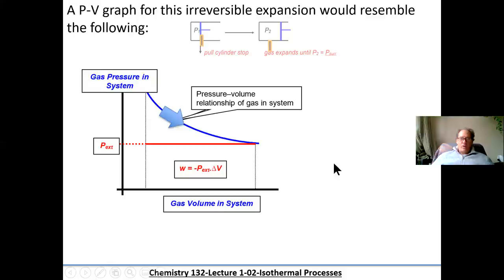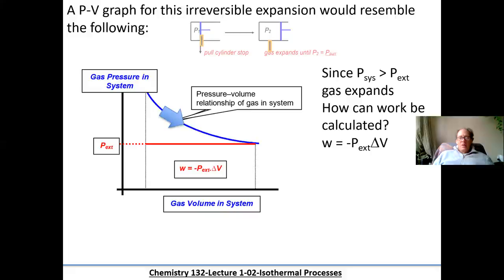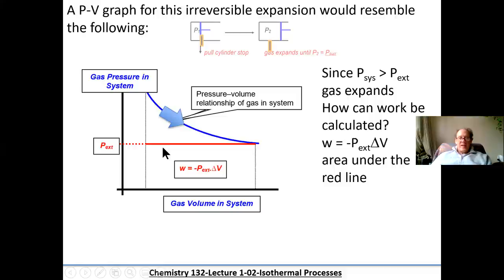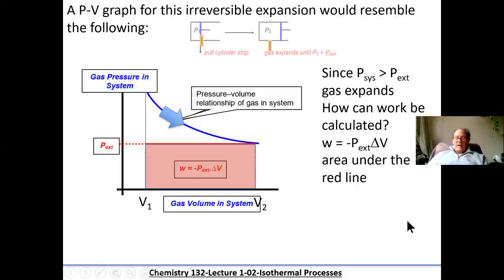Since the two pressures are not equal — system pressure is much greater than external pressure — you get a rapid expansion. We calculate work as the external pressure times the volume change. The work being done by a system as it expands is considered negative work because the system is losing energy. If you look at the graph, it's the area underneath the straight line. From V1 to V2, that area is the quantity of work done by the gas as it expanded.